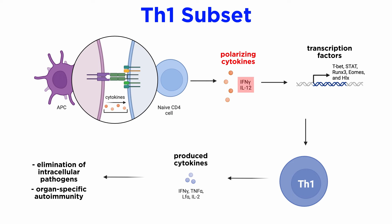Th1 cells are created when cytokines IL-12 and interferon gamma initiate the downstream signaling cascade. IL-12 is secreted into the environment by the APCs after they are activated through pattern recognition receptors. Various important transcription factors are involved in the differentiation of the Th1 cells. Notably, the master regulator for Th1 differentiation is the T-box transcription factor TBET. TBET expression relies on signal transducer and activator of transcription 1, or STAT1 expression, which in turn is activated by interferon gamma.